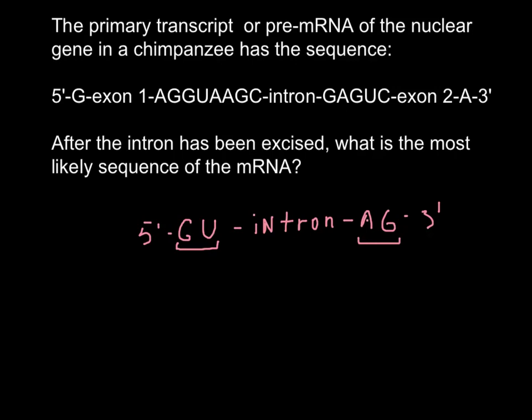So let's search it in our example sequence, and here we have GU and here we have AG. So this is where the intron begins and where it ends, and these two dinucleotides belong to the intron.